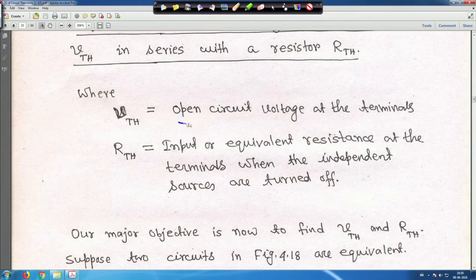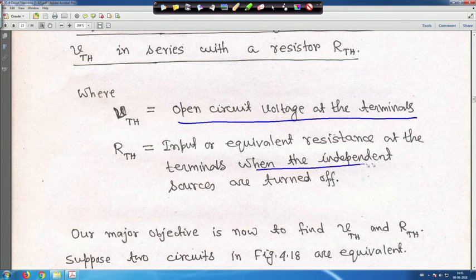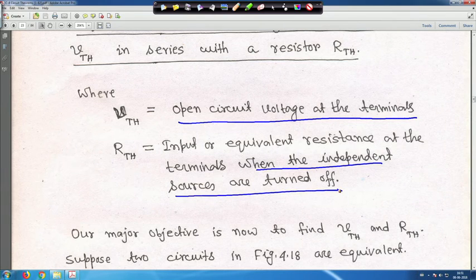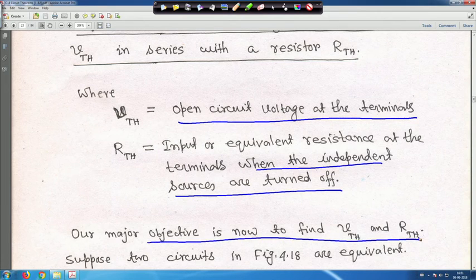We will see how to obtain the open circuit voltage at terminals 1 and 2, and the input or equivalent resistance at the terminal. When independent sources are turned off — if it's a voltage source, you short it; if it's a current source, you open it. Our major objective is to find V_Thevenin and R_Thevenin.